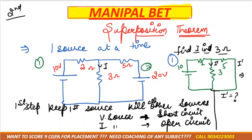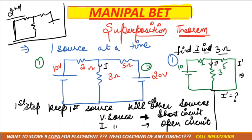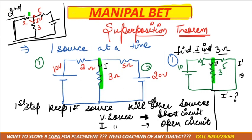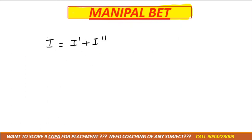Now in the second step, we short circuit the first source and keep the second source. Now mark i-double-dash. Again, whichever method you want, calculate i-double-dash. In the final step, i equals i-dash plus i-double-dash, because the direction of i-dash and i-double-dash are both the same, so they are added together.